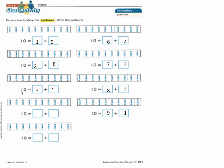Three and seven are partners of ten. Here in this example, we will draw a line after four crayons. Count the crayons that come before the line: one, two, three, four. Write four. Then count after the line — six. Four plus six equals ten. Four and six are partners of ten.